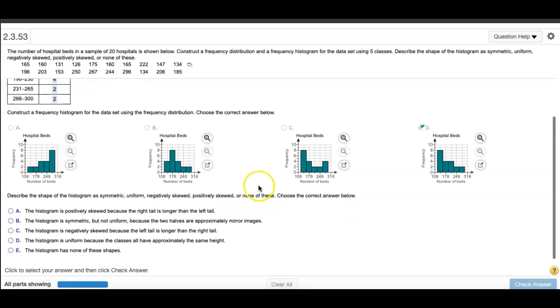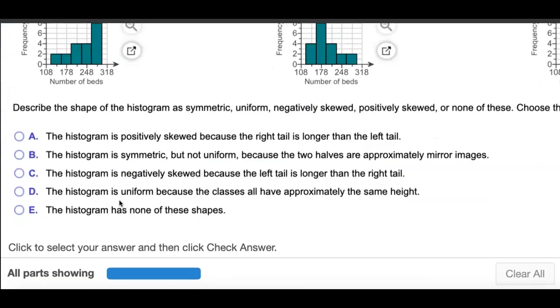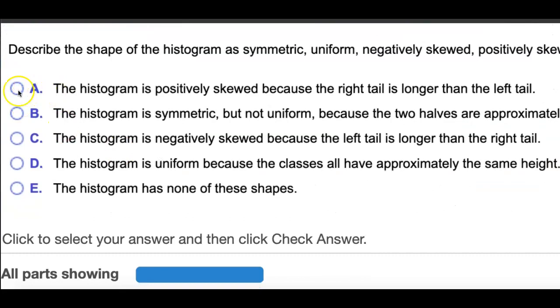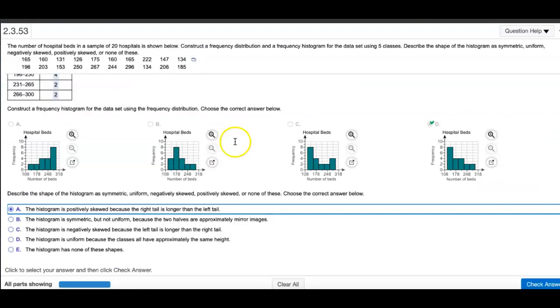Then I'll tell them this is a positively skewed distribution because the right tail is longer than the left tail. Ta-da! And that's it for this problem.